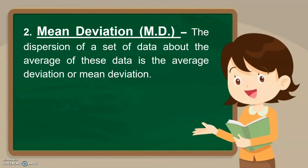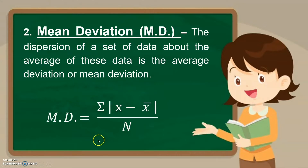When we say mean deviation, the symbol is MD. The dispersion of a set of data about its mean is the average deviation or mean deviation. The formula is: MD equals the summation of the absolute value of x minus mean, divided by n. In this formula, MD is the mean deviation, x is the individual score, x-bar is the mean, and n is the number of scores. The absolute value means we disregard the negative sign — the answer will always be positive.